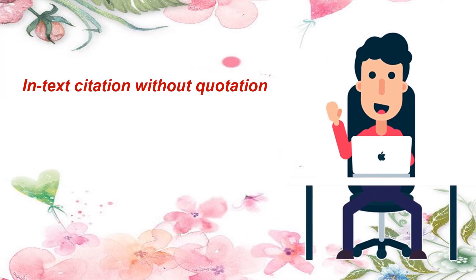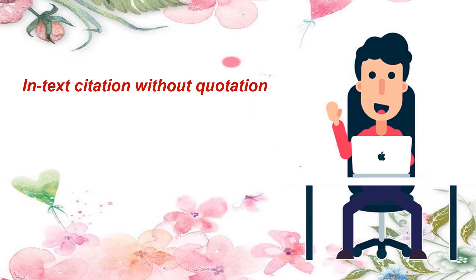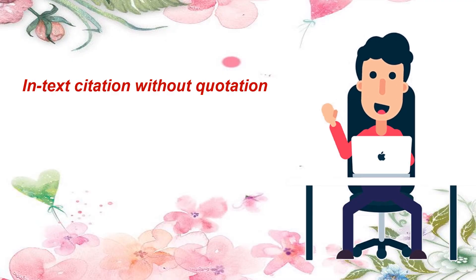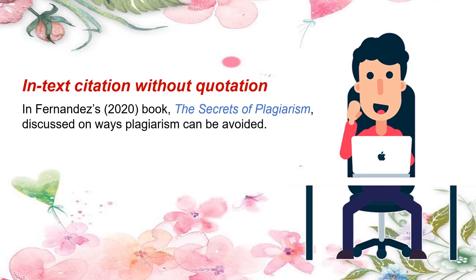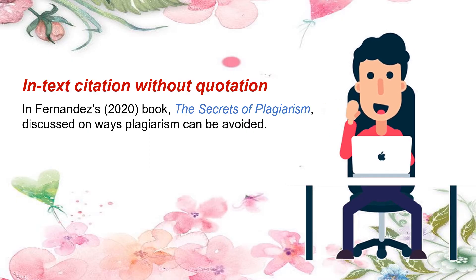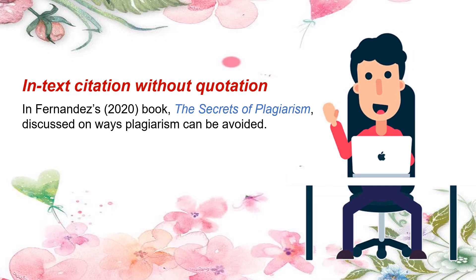In some cases, the title of a book, articles, proceedings, journal articles, and the like are italicized. However, when you italicize the title, omit the quotation marks. Example for in-text citation without quotation marks: In Fernandez's 2020 book, *The Secrets of Plagiarism*, discusses ways plagiarism can be avoided. Again, when you italicize the title, omit the quotation marks.